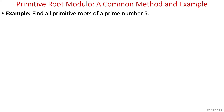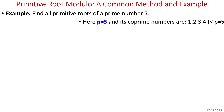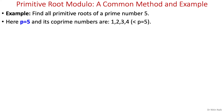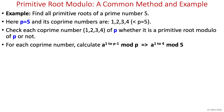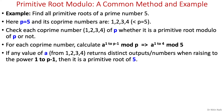Using the previous example of finding all primitive roots of prime number 5: since p is 5, find all co-primes to 5, which are 1, 2, 3, 4. Then check each co-prime number whether it is a primitive root modulo of 5 by calculating a to the power 1 through 4 mod 5. If any value of a returns all distinct outputs, then it is a primitive root of 5.